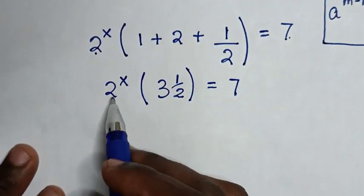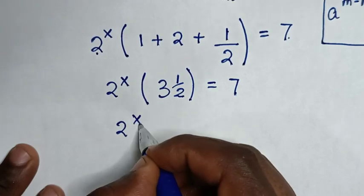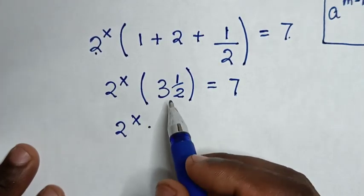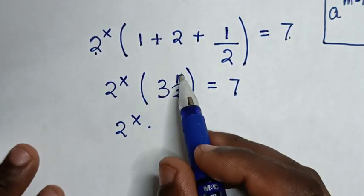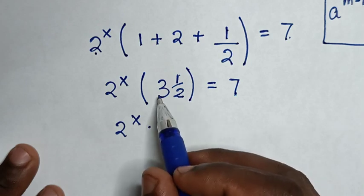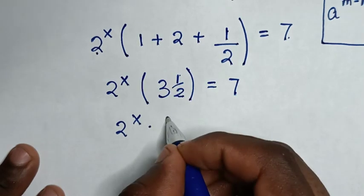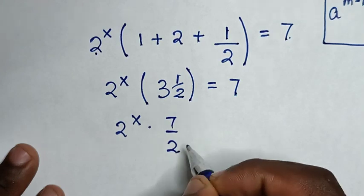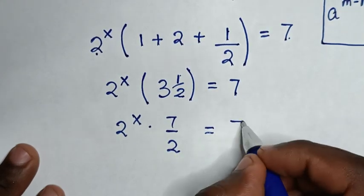Then in the next step, it will be 2 power of x times 3 and a half. Converting to an improper fraction: 2 times 3 is 6, plus 1 is 7. So it will be 7 over 2, which is equal to 7.